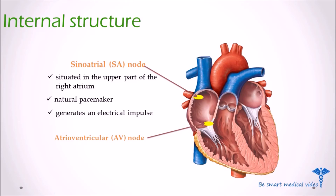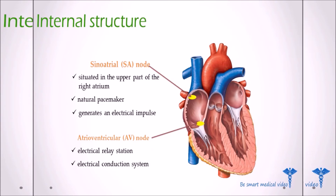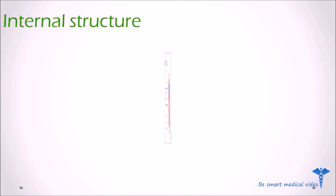There is another node known as the atrioventricular node, or AV node. The atrioventricular node is the electrical relay station between the atria and the ventricles, and it is a part of the electrical conduction system of the heart.